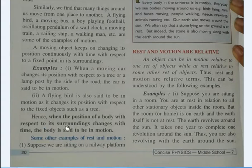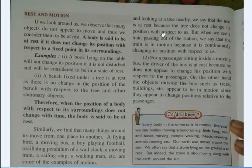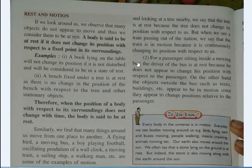Hence, when the position of a body with respect to its surroundings changes with time, the body is said to be in motion. For example, suppose we are sitting on a railway platform and looking at a tree nearby — the tree is at rest because it does not change its position with respect to us. But when we see a train passing out of the station, the train is in motion because it is continuously changing its position with respect to us.